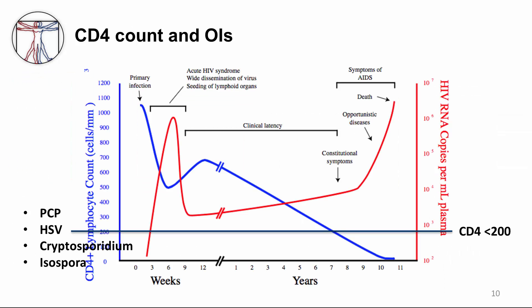AIDS is the result of chronic HIV infection and the concomitant decline of CD4 cells to less than 200, or the presence of AIDS-defining conditions such as PCP pneumonia, regardless of CD4 count. OIs that can occur when CD4 count is less than 200 include PCP pneumonia, HSV reactivation, and the watery diarrheal causes of cryptosporidium, microsporidium, and isospora.